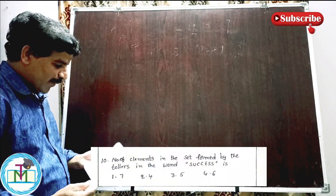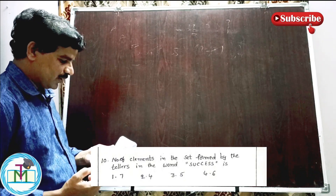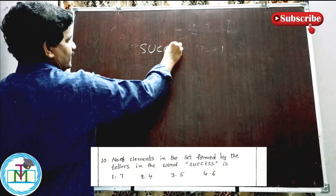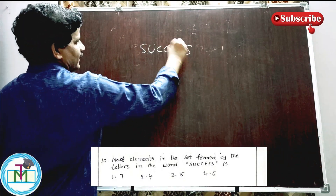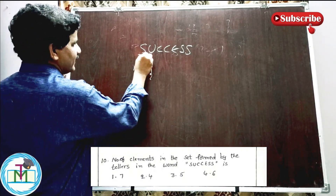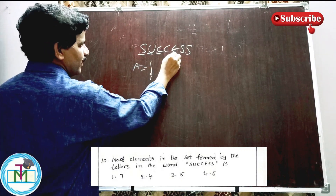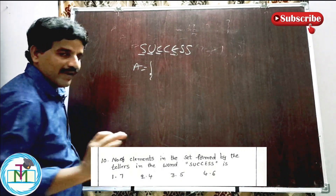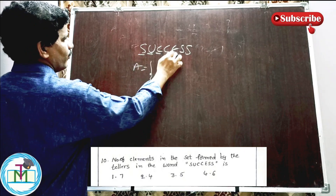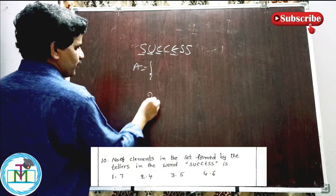Question number ten: number of elements in the set formed by the letters of the word 'success.' The letters are S-U-C-C-E-S-S. In a set, every element is taken only once. The unique letters are S, U, C, E — giving us 4 elements.